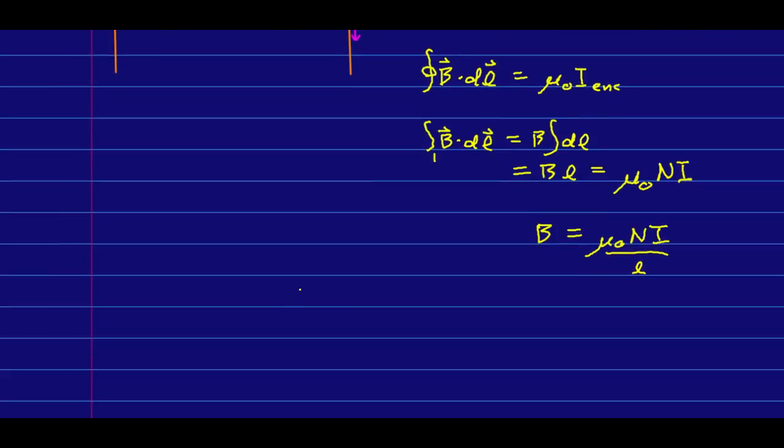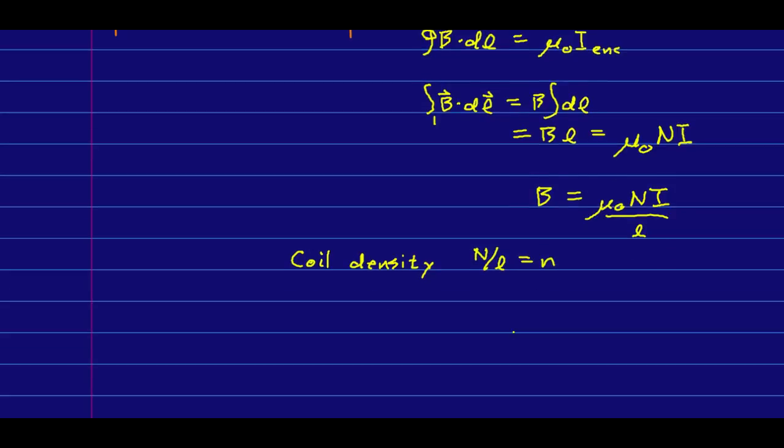And so my B field is just mu naught NI over L. And very commonly, we define the coil density, the number of coils in the solenoid per unit length, N over L, and we call it little n. So the B field strength inside the solenoid is just mu naught n I.